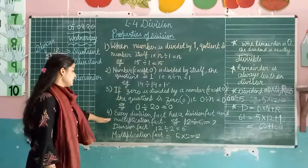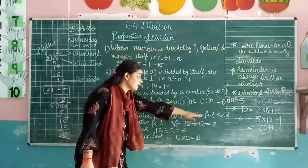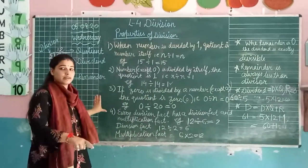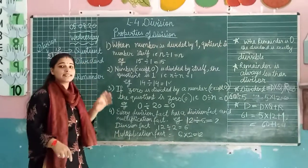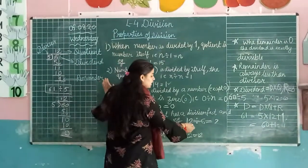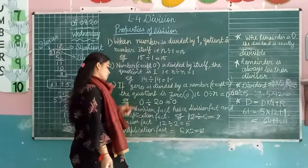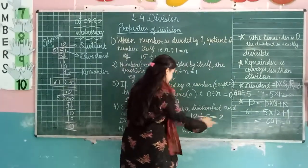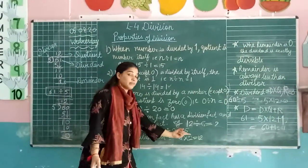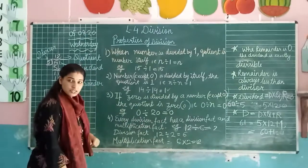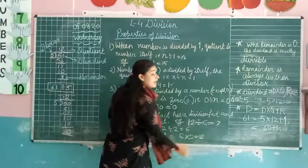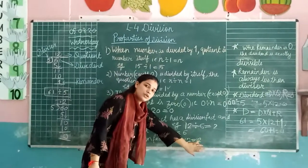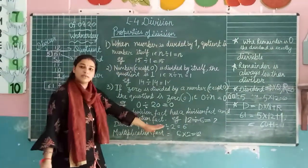The fourth property is: every division fact has a corresponding multiplication fact. So the division fact gives us a quotient of 6. And the related multiplication fact — when 6 is multiplied by 2, we get 12. So 6 multiplied by 2 is equal to 12. Every division fact has a multiplication fact.